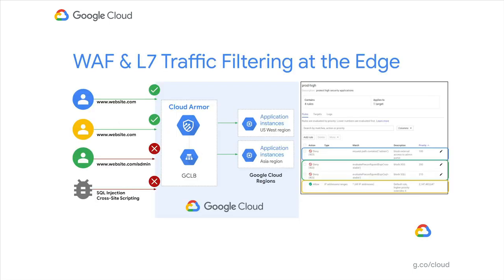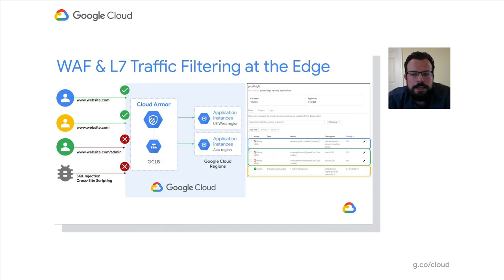Cloud Armor security policies can simultaneously invoke pre-configured WAF rules as well as user-defined rules to inspect request headers, parameters, and cookies. Policies are stored, evaluated, and enforced at the edge of Google's network far upstream of customers' infrastructure. In the example on this slide, we have a policy that first denies access to any external clients requesting access to the admin portal. Next, the Cloud Armor security policy is configured to invoke pre-configured WAF rules to detect and block known signatures for SQL injection and cross-site scripting attacks, which collectively have dozens of sub-signatures. Finally, if the request is neither targeting the admin portal nor containing such signatures, we will allow that traffic as configured through the default rule.